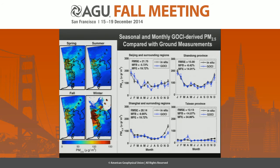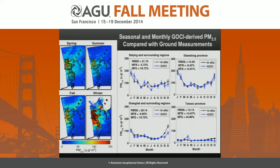We now look at the seasonal and monthly variation of GOSI-derived PM2.5. Here's a map showing the seasonal mean GOSI-derived PM2.5 for 2013 over eastern China, with circles still representing monitors. Both GOSI and ground measurements indicate the highest PM2.5 concentration in winter and the lowest in summer. We then took four regions from the map to further examine their monthly PM2.5 variation: Beijing and surrounding regions, Shandong province, Shanghai and surrounding regions, and Taiwan province.